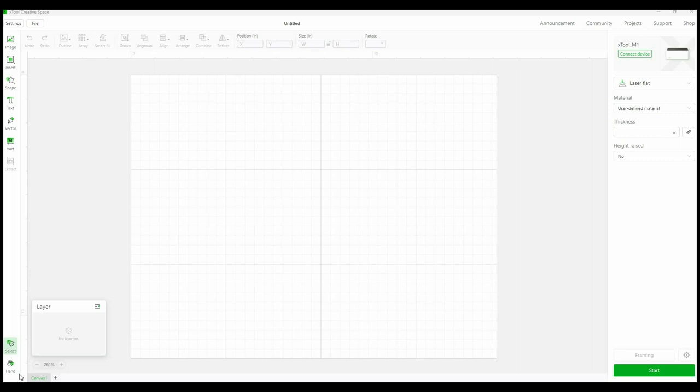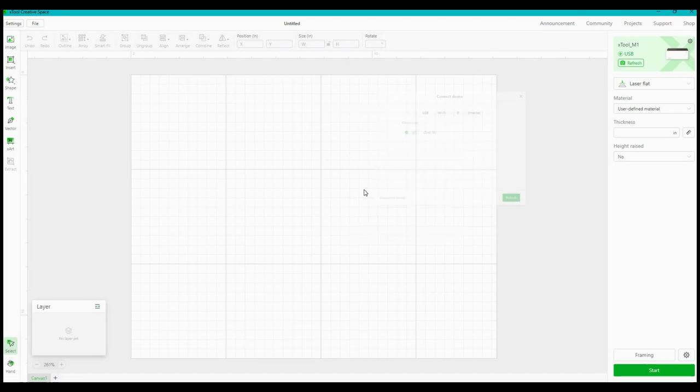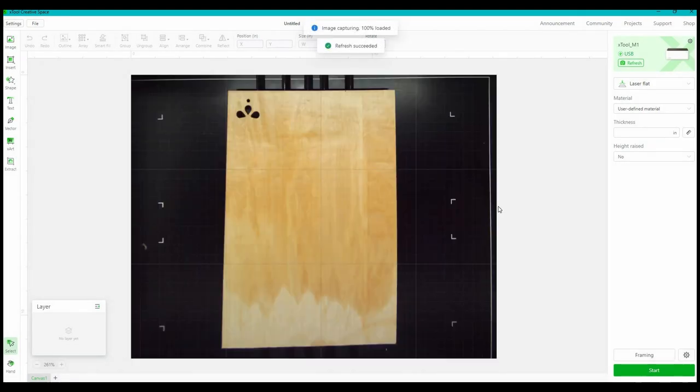The first thing I need to do is physically connect the M1 to my computer with the USB cord. And now the camera will show my wood that is in the machine and this is going to make it really easy to apply the designs.